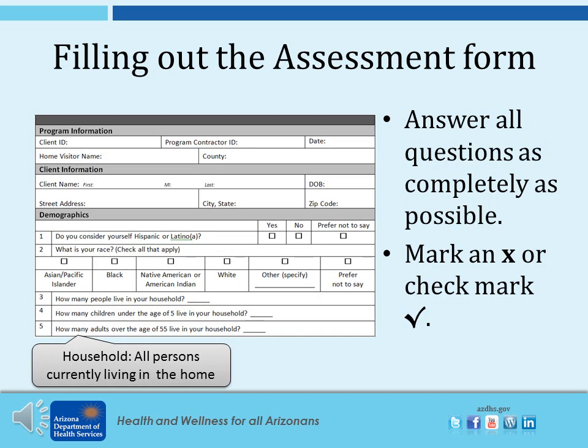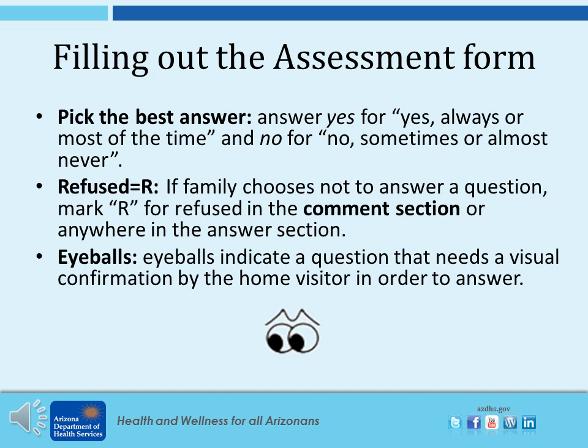When filling out the assessment forms, please answer all questions as completely as possible. Mark an X or a check mark next to the right answer. The demographic section is pretty self-explanatory. Household means all persons currently living in the home. Be sure to pick the best answer: yes for yes, always, or most of the time; and no for no, sometimes, or almost never. If the family chooses not to answer a question, mark the letter R for refused in the comment section. When you see eyeballs, this indicates that the question needs visual confirmation by the home visitor. For example, for the question does the family have a working smoke detector, the home visitor must look at the smoke detector in order to answer.